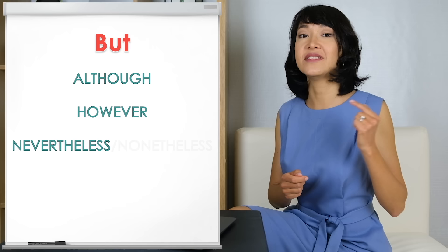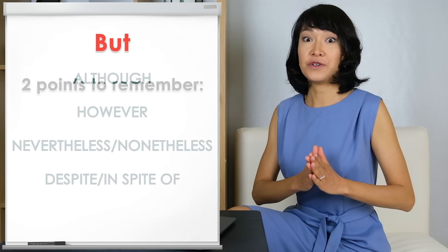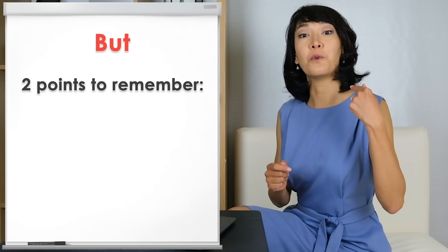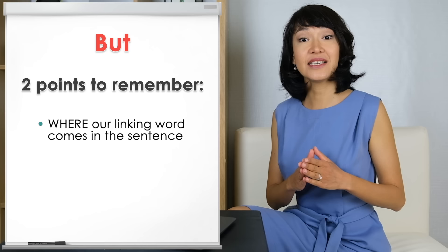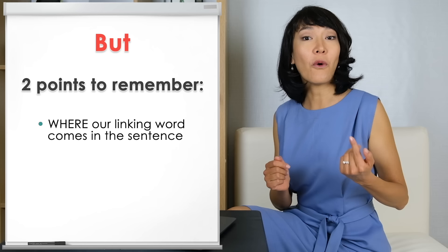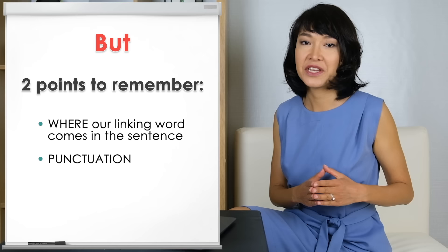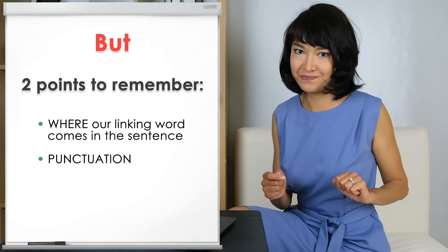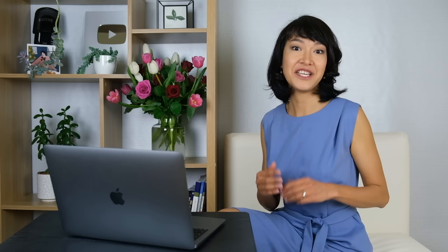Here they are: although, however, nevertheless or nonetheless, and despite or in spite of. There are two very important points to remember and practice. The first is where the linking word comes in the sentence — does it come in the middle and join the two parts, the same as 'but,' or can we put it right at the beginning? The second point is punctuation. Remember that the IELTS examiner will be looking very carefully at your punctuation — when do you need to use a comma, semicolon, or a full stop?